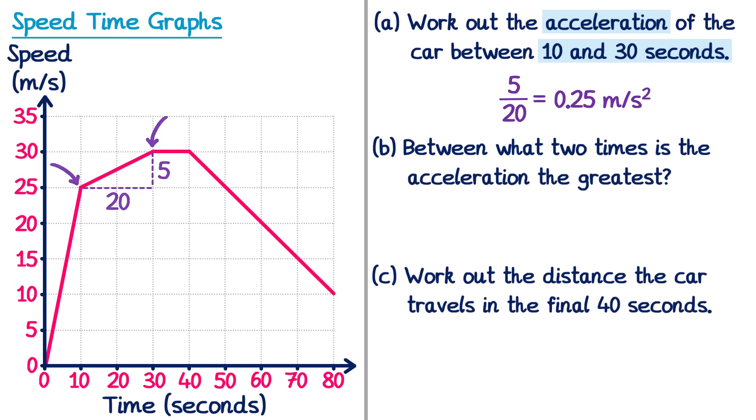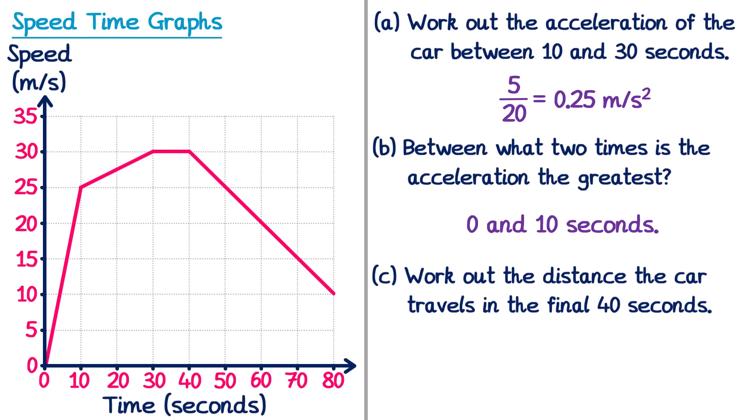Part B asks between what two times is the acceleration the greatest. Since acceleration equals the gradient, the greatest acceleration will be the part with the steepest line. Looking at the graph, the steepest line is between 0 and 10 seconds, so the answer is between 0 and 10 seconds.